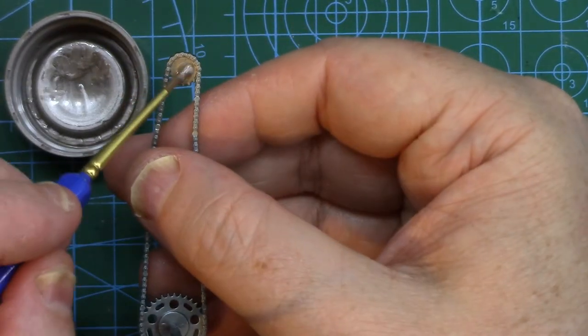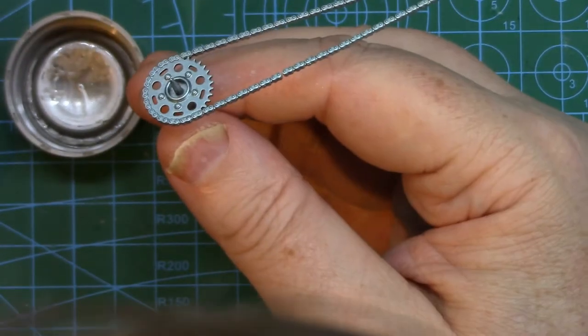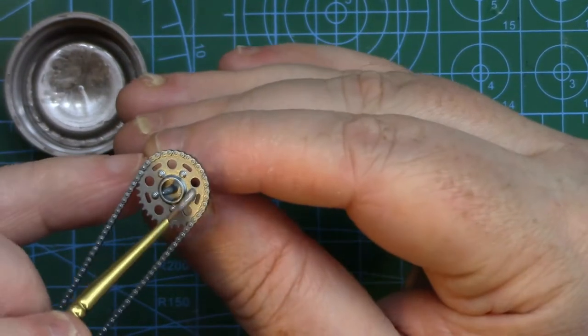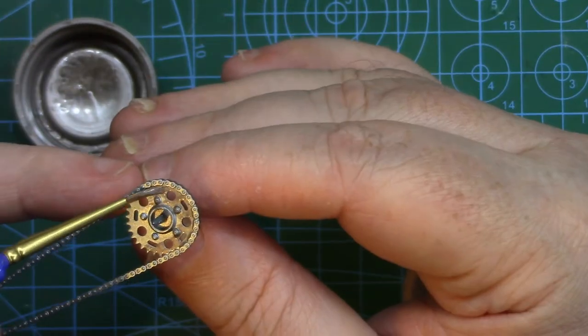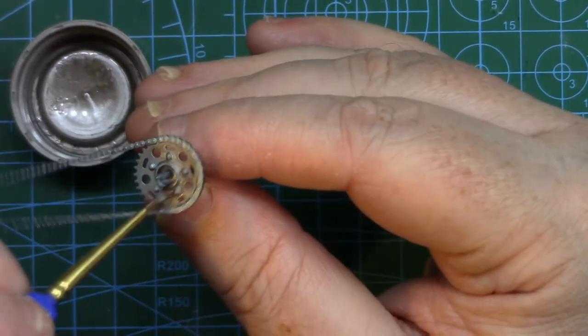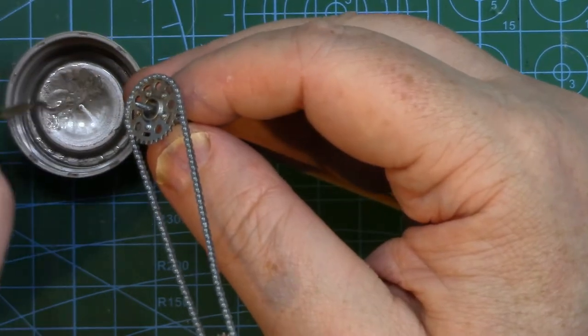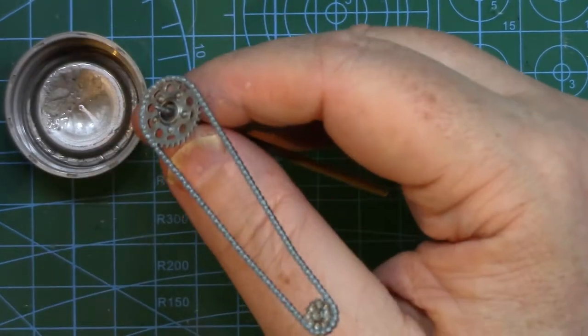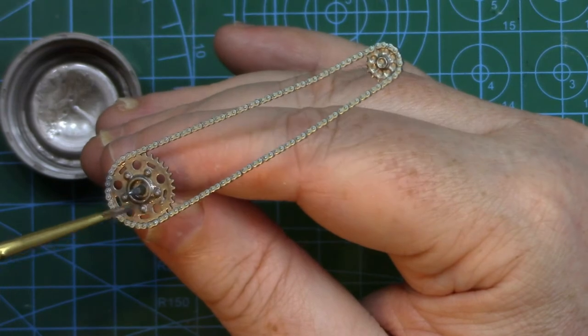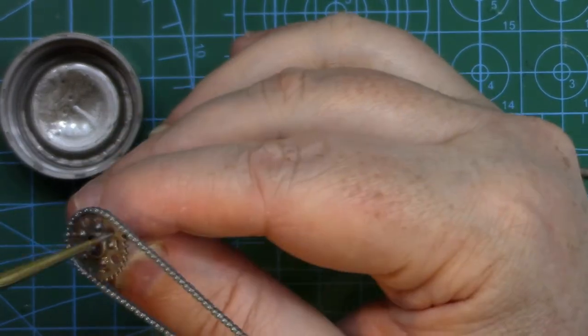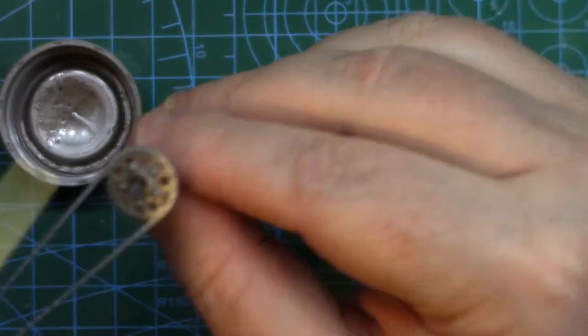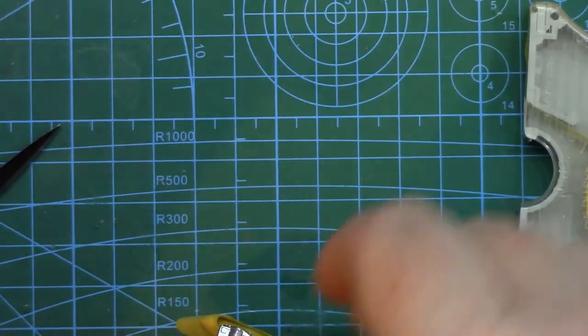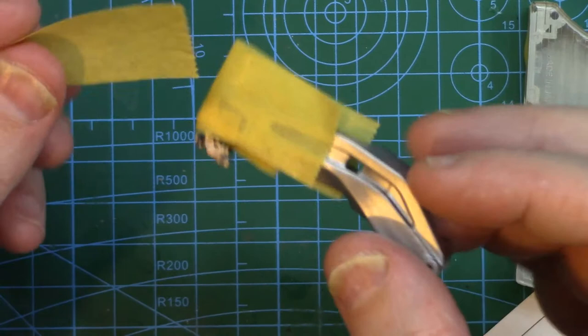I just brush painted the center part. Once again you could mask all this up and airbrush it, but just with the way the shape's going around it just seemed easier to just brush paint it. That looks quite good. There's also some titanium silver on the sprockets. The chain itself has been airbrushed using Ammo titanium blue.